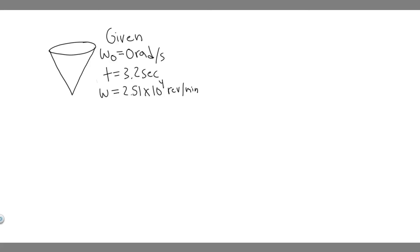In this problem, we're told a dentist's drill starts from rest. After 3.2 seconds of constant angular acceleration, it turns at a rate of 2.5 times 10 to the 4 revolutions per minute. Part A: find the drill's angular acceleration. Part B: determine the angle in radians through which the drill rotates during this period.